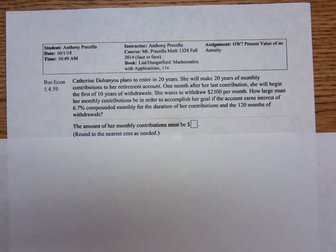Catherine plans to retire in 20 years. She'll make 20 years of monthly contributions to her retirement account. One month after her last contribution, she'll begin the first of 10 years of withdrawals. She wants to withdraw $2,300 per month. How large must her monthly contributions be in order to accomplish her goal if the account earns interest of 6.7% compounded monthly for the duration of her contributions and the 120 months of withdrawals.